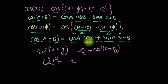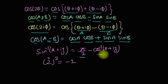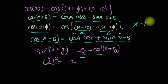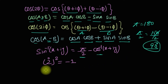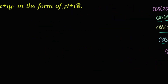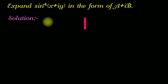अगर sin⁻¹(x+iy) हो तो हम इसको लिख सकते हैं π/2 − cos⁻¹(x+iy)। π का value 180° होता है तो π/2 means 90°। अगर i² हो तो उसका value −1 रख सकते हैं। तो आइए अब शुरू करते हैं।